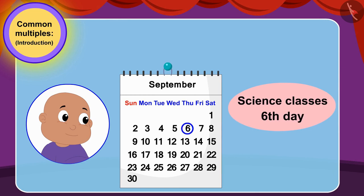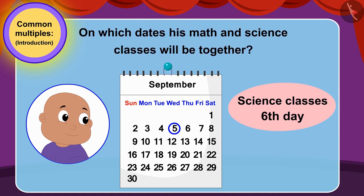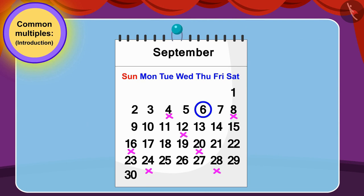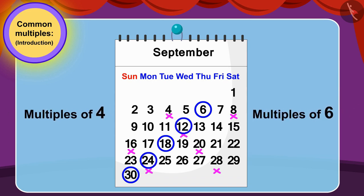Children, if Bablu's science class was every 6th day instead of every 5th, then can you tell on which dates his math and science classes will be together? You can stop the video and find the answer. Well done children, your answer is absolutely correct. We can find the answer by finding common multiples of 4 and 6. We can see that the numbers 12 and 24 are common multiples of 4 and 6. So, Bablu's math and science classes will be held on the 12th and 24th simultaneously.